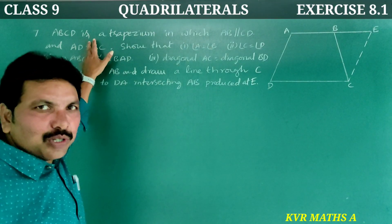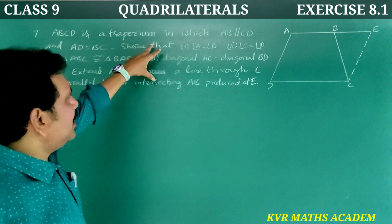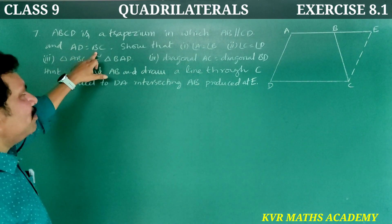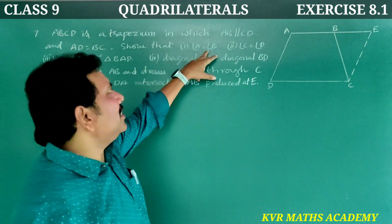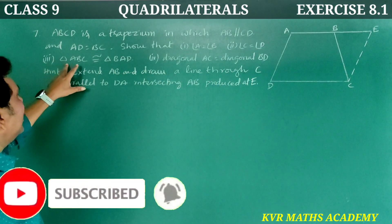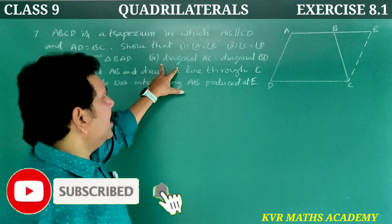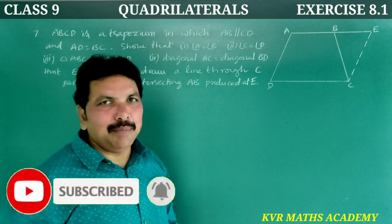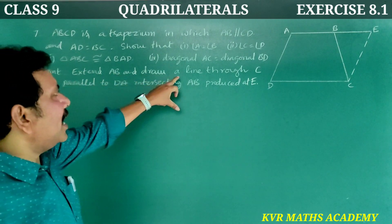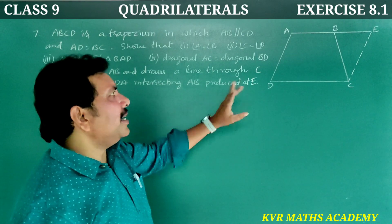Next, 7th question. This is the final question in this exercise. ABCD is a trapezium in which AB is parallel to CD and AD is equal to BC. Show that angle A is equal to angle B, angle C is equal to angle D, and triangle ABC is congruent to triangle BAD. Finally, diagonal AC is equal to diagonal BD.